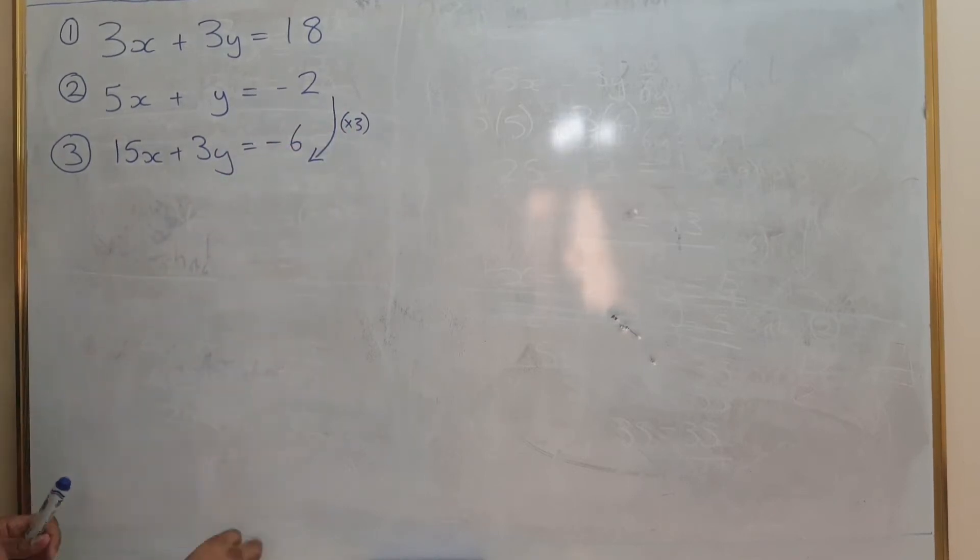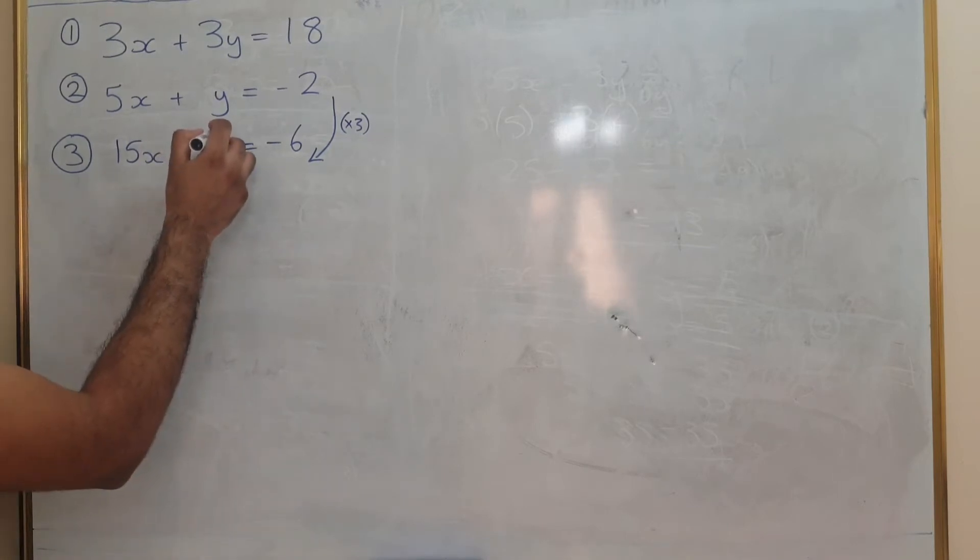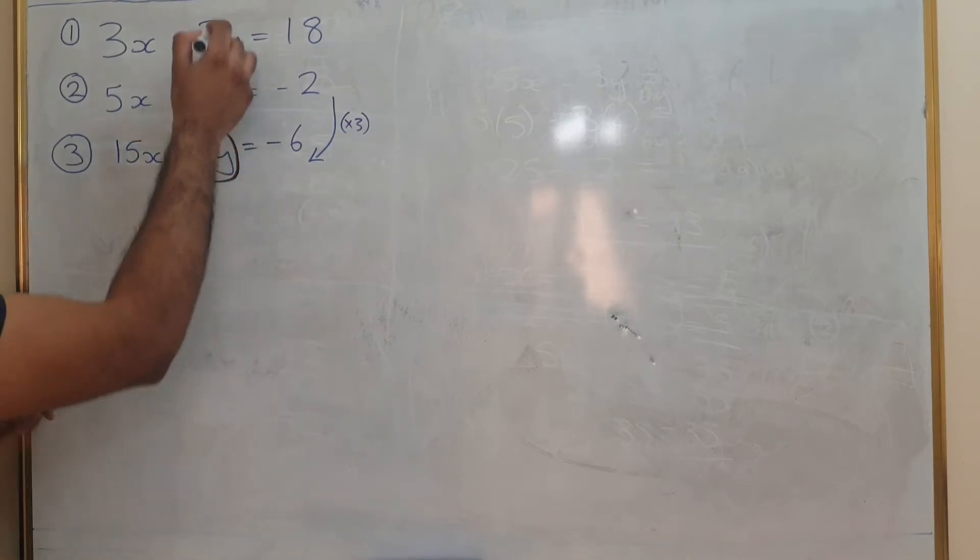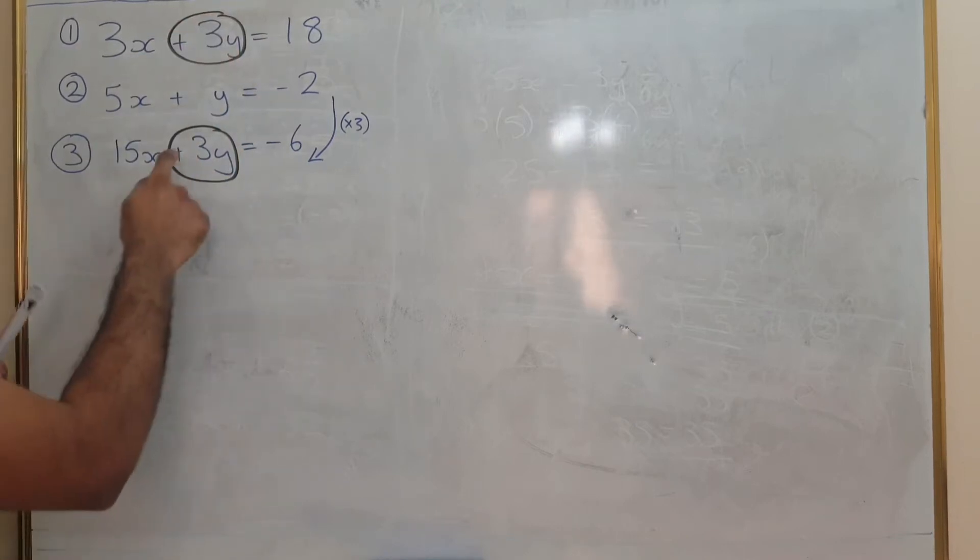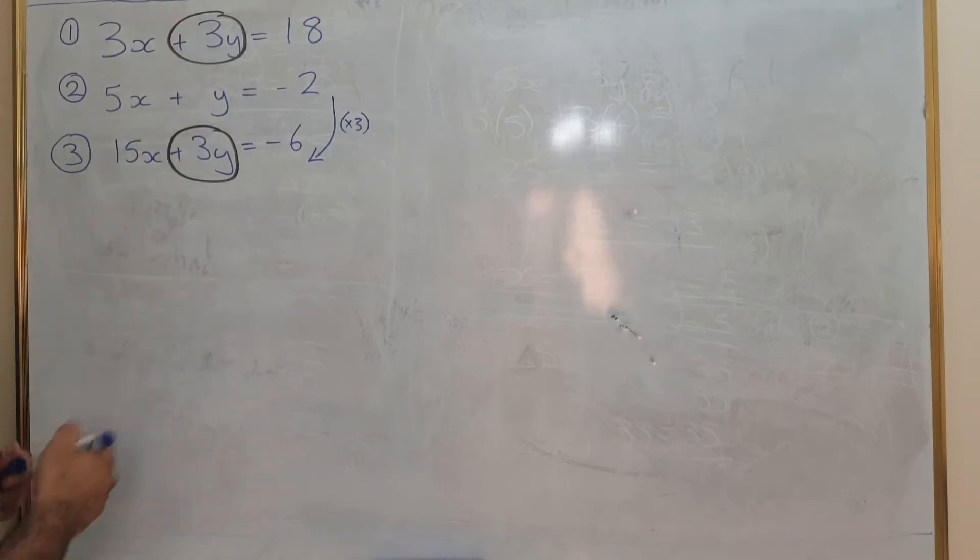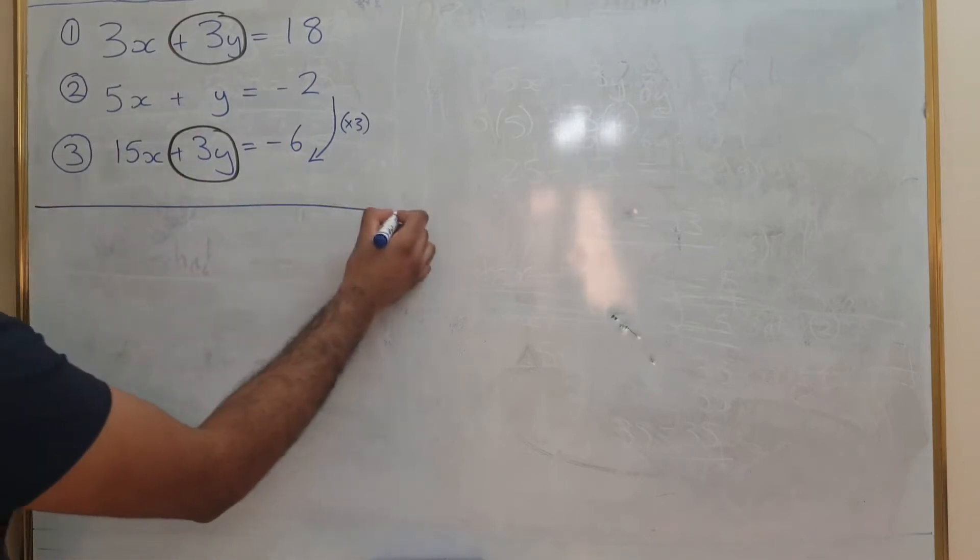Now what you should be able to see is that we've got the same amount of y's in both equations and we've got the same sign as well. So whenever we have the same sign we are going to subtract.